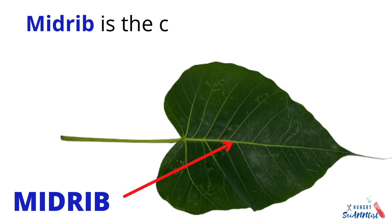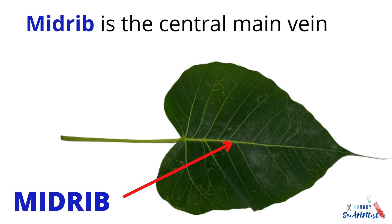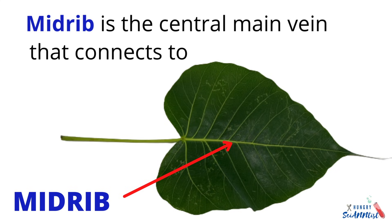Midrib. Midrib is the central main vein that connects to the leaf stalk.